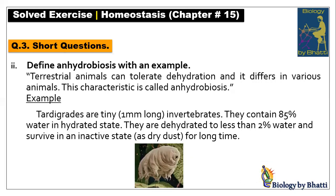Number two: define anhydrobiosis with an example. There is no typical example given in our textbook, so students give examples like kangaroo rat, humans, or camel. Anhydrobiosis is the capability of different animals to survive dehydration in terrestrial conditions. A good example is tardigrades, also called water bears — very small invertebrates, only one millimeter long. In their hydrated state they are 85% water, but when dehydrated they survive with only 2% water for a longer period of time. You can also quote examples of camel or kangaroo rat.